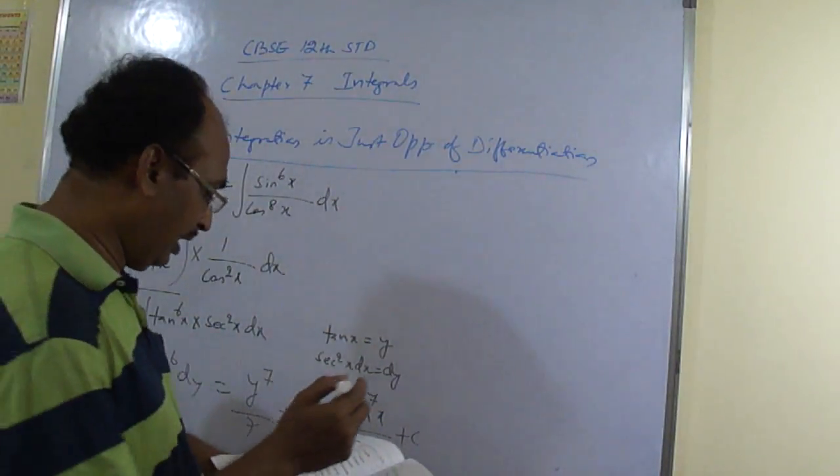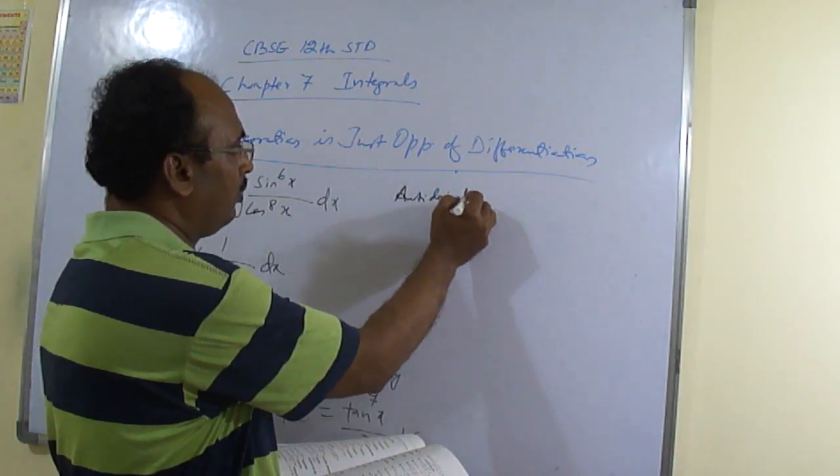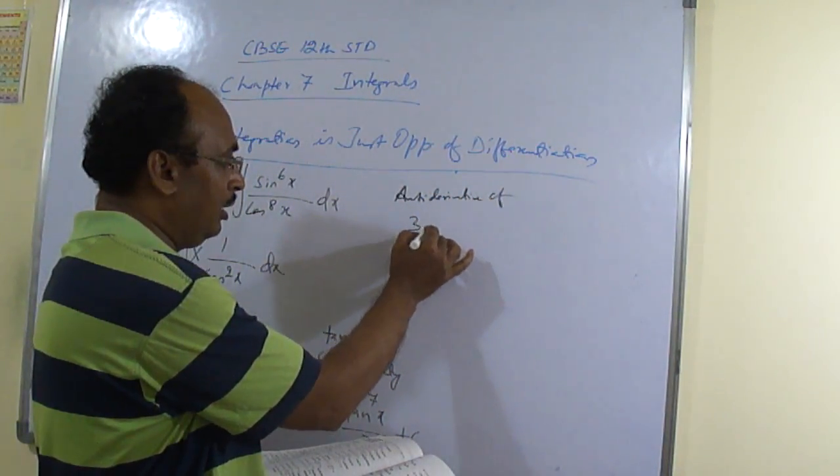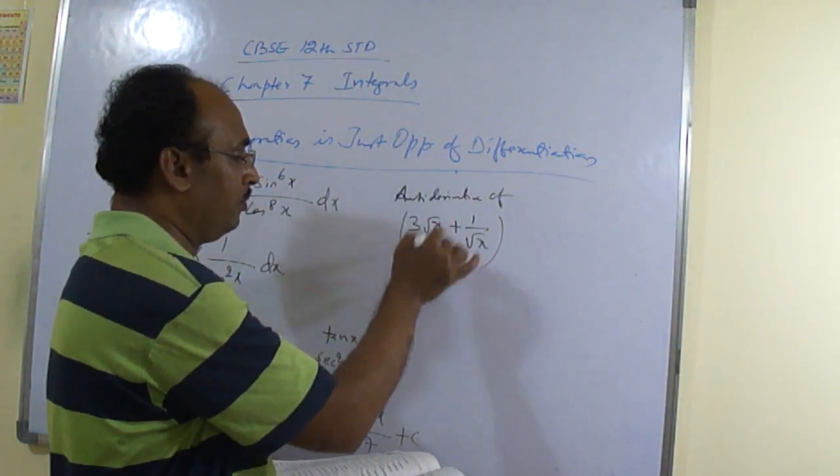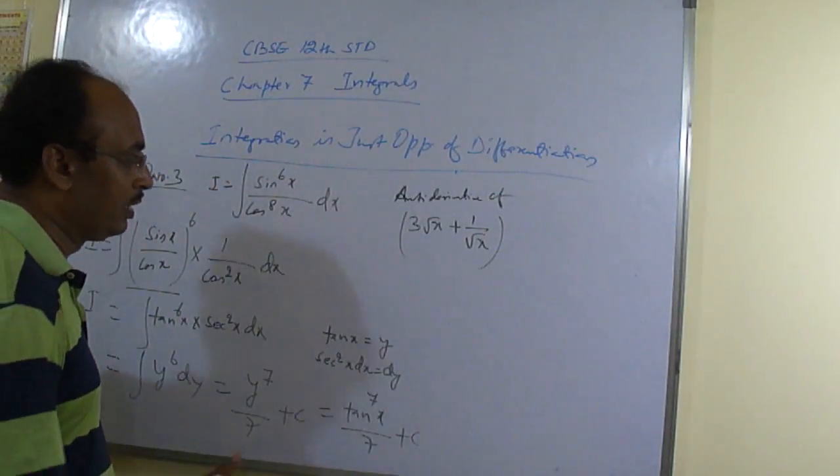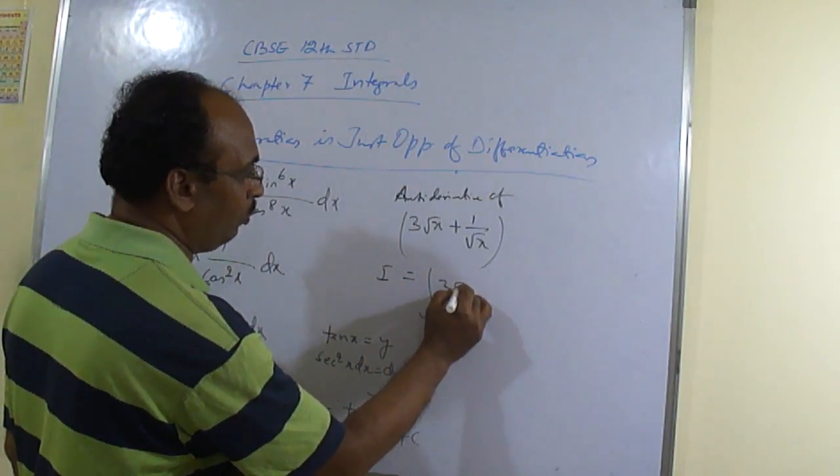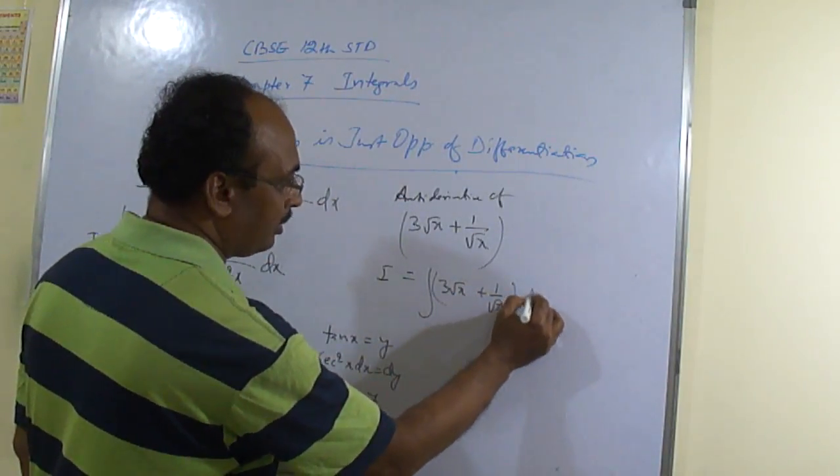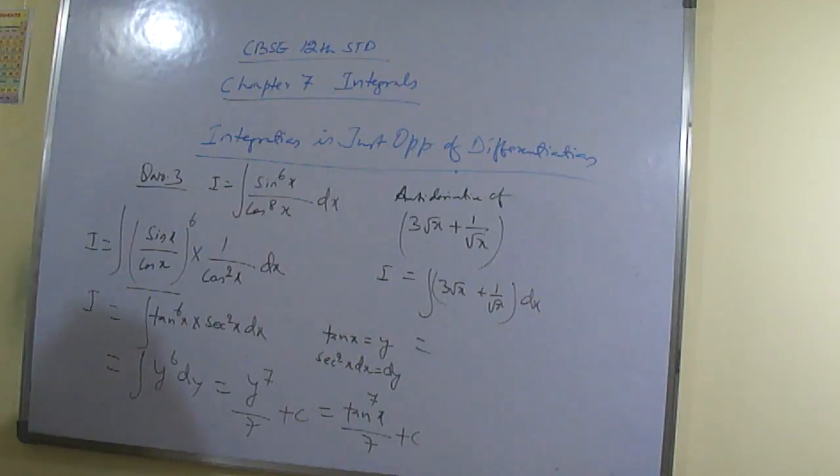Like question one, it is given that find antiderivative of 3 root x plus 1 by root x. Can you find antiderivative? Just integral? Correct or not? Yes, sir. So this is what? Integration of 3 root x plus 1 by root x dx. So this is by using that basic formula only. Yes, sir. Okay.